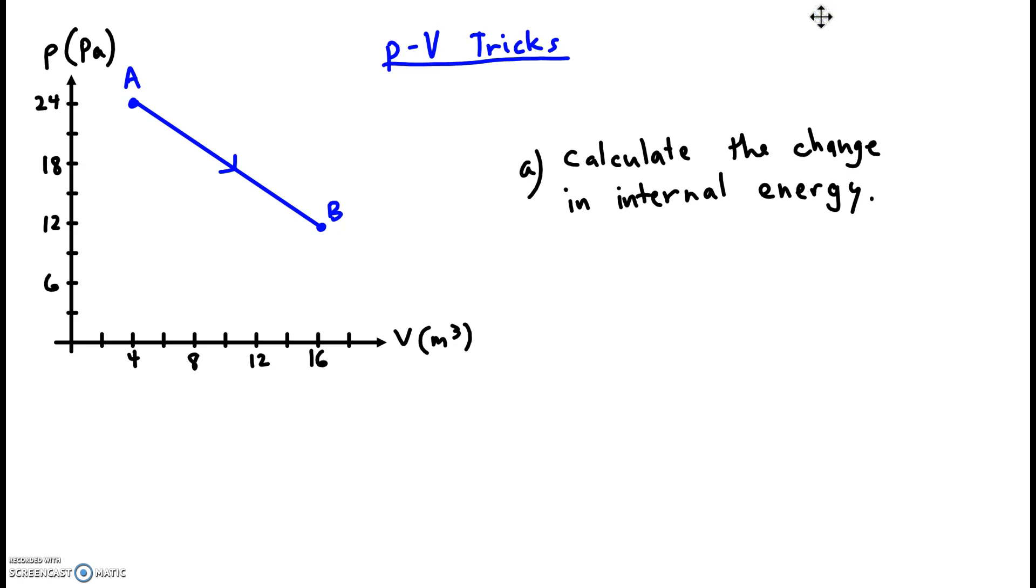We have to calculate the change in internal energy. We cannot use the normal equation that we're used to. Internal energy is equal to 3/2 nRT, and the change in internal energy, delta U, is caused because the temperature changes. But this graph doesn't tell me how many moles we have. The graph doesn't tell me how much the temperature rises or drops. So I can't use that formula.